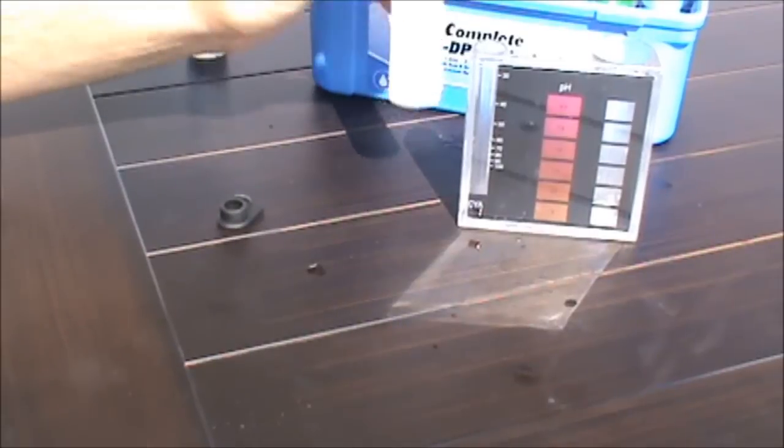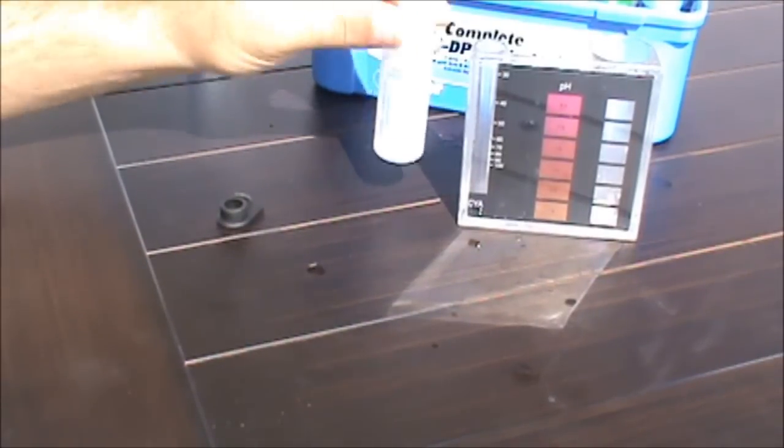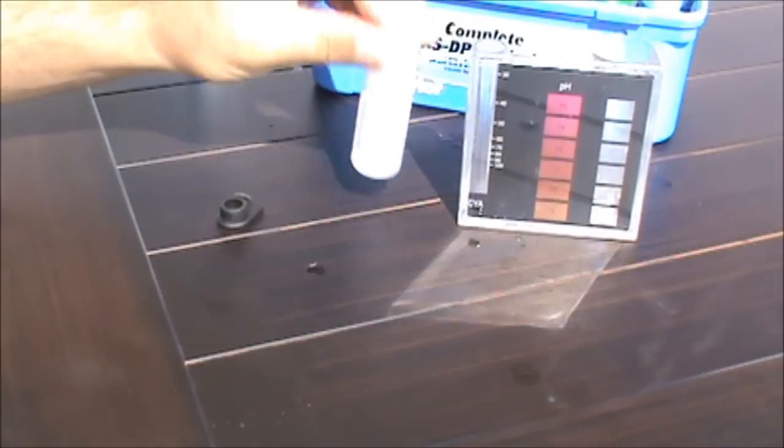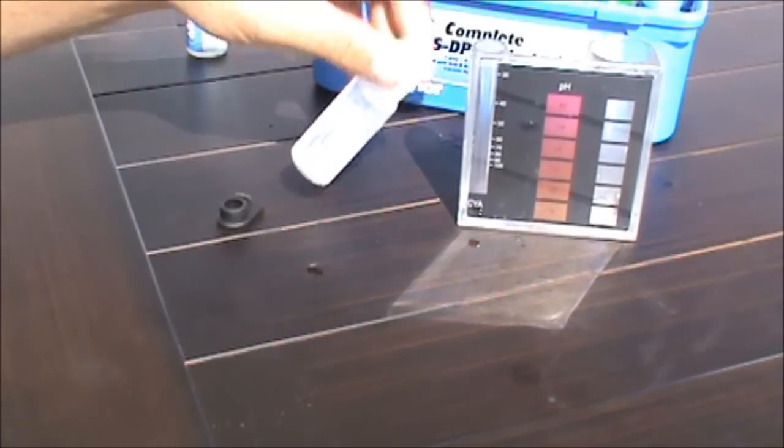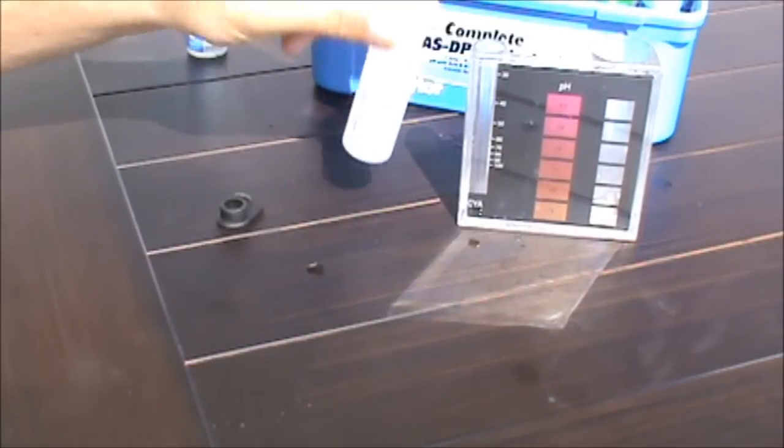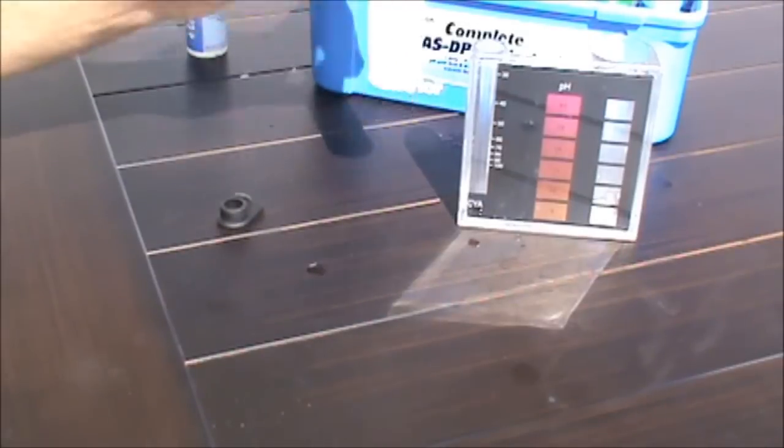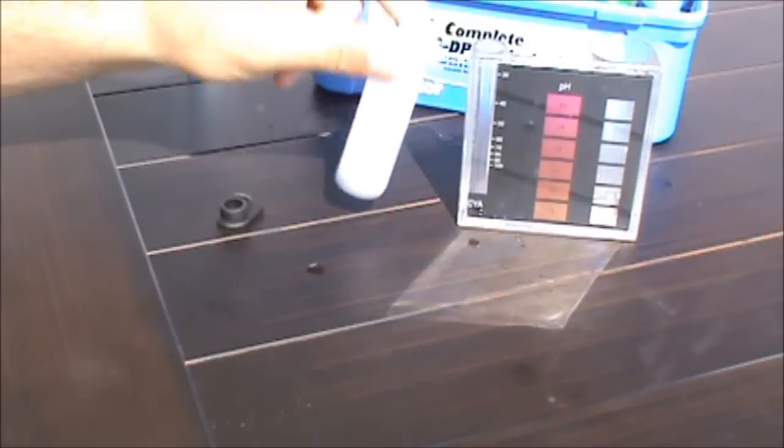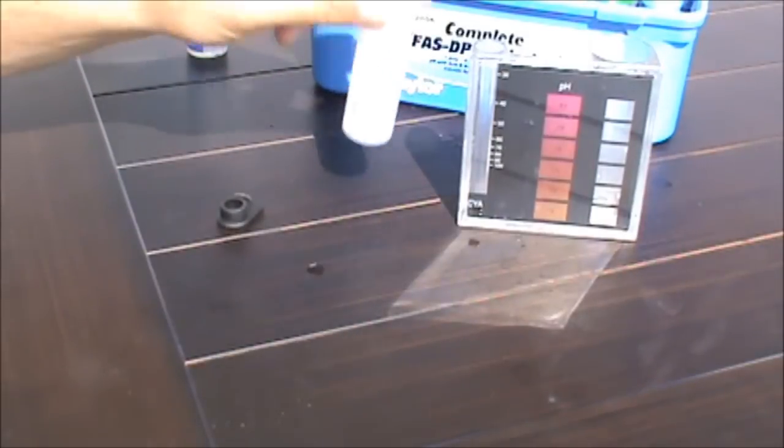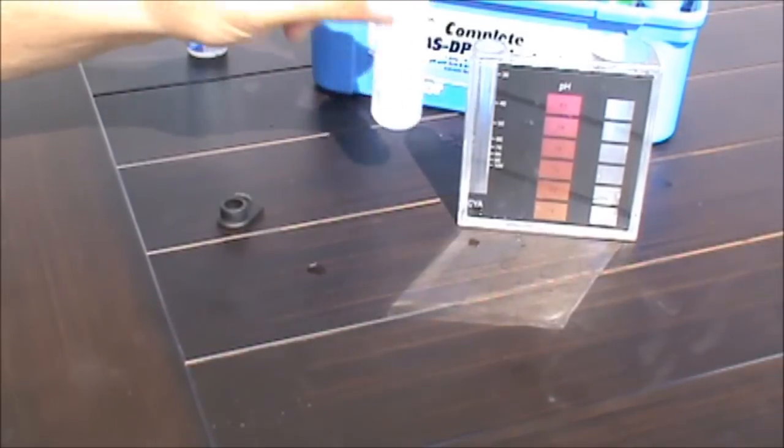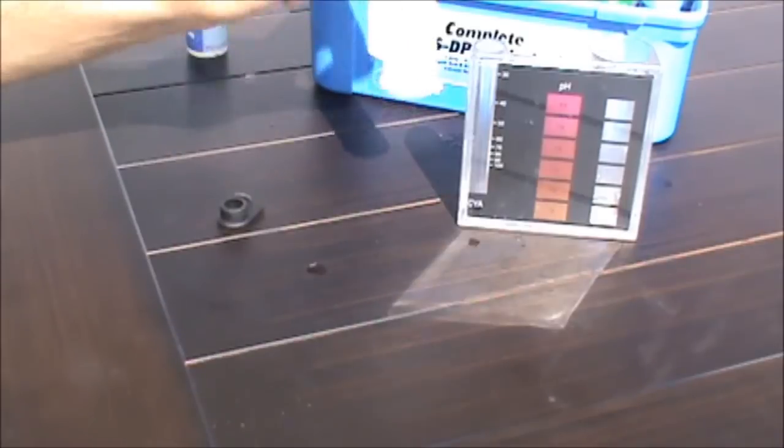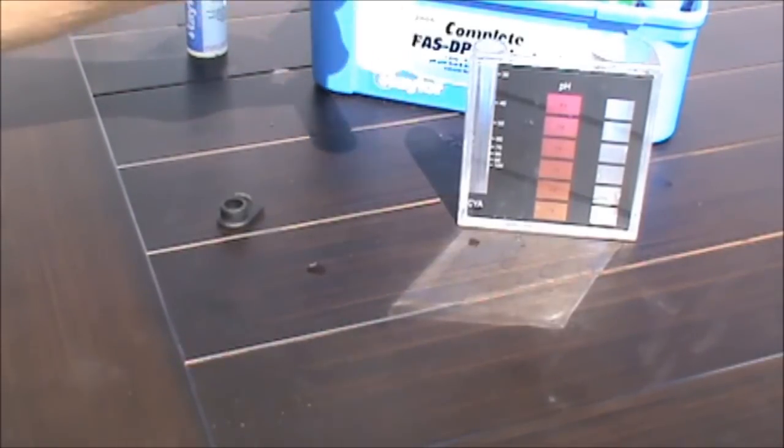We're going to take this solution and pour it in the small comparator, which is this test tube here. They have a black dot at the bottom of the small comparator. You want to add this solution until you can no longer see the black dot at the bottom. Once the black dot disappears from your view when you're right above it, that's going to be your CYA.